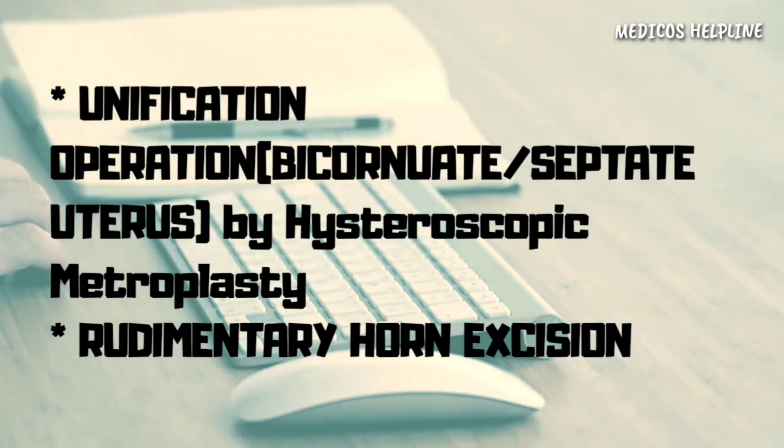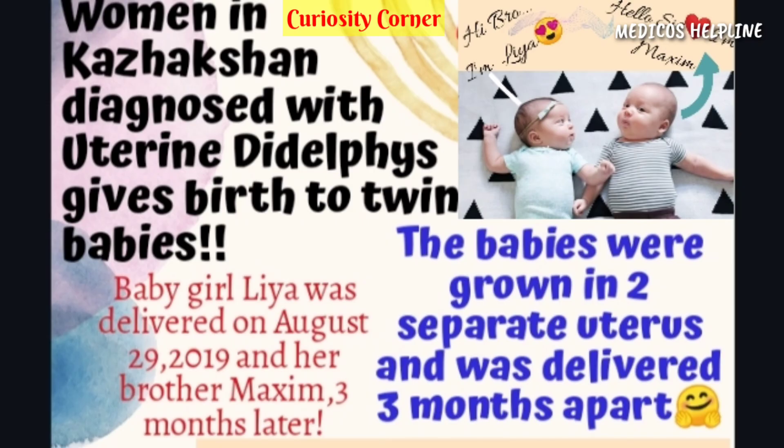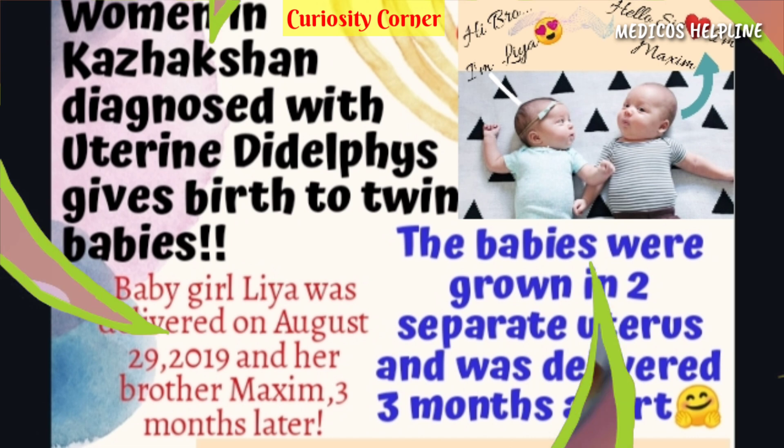Did you know that uterine didelphys has the best possibility of successful pregnancy? A woman in Kazakhstan diagnosed with uterine didelphys gave birth to twin babies on August 29, 2019. The babies were grown in two separate uteruses and were delivered three months apart.